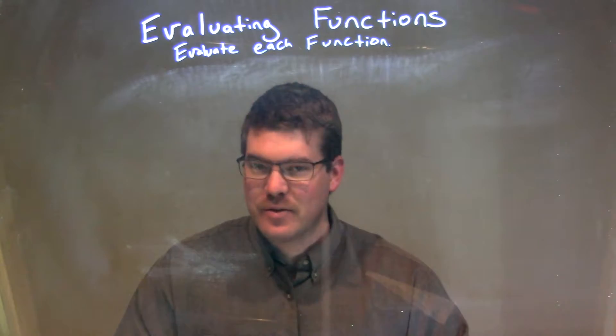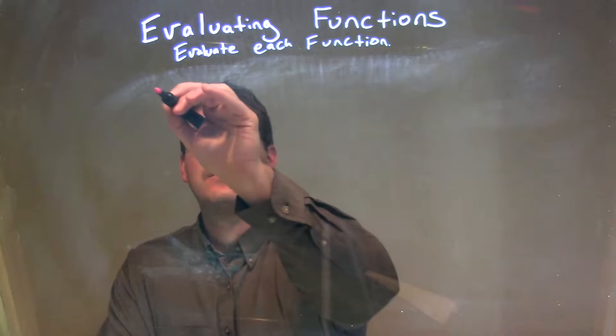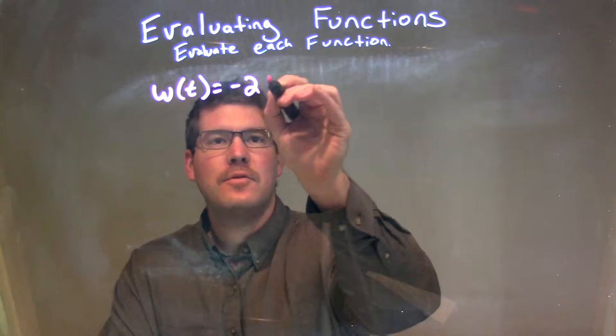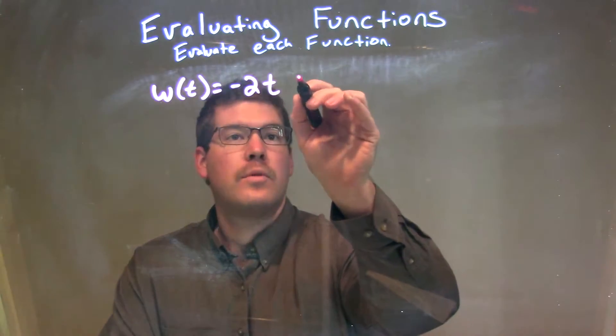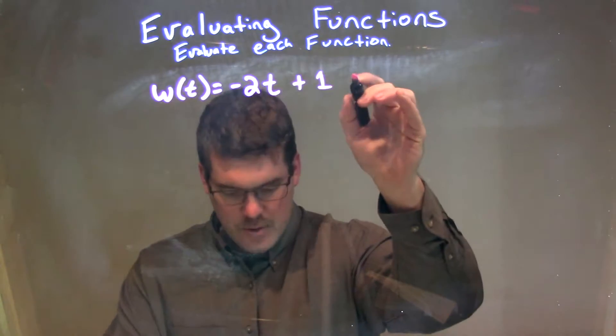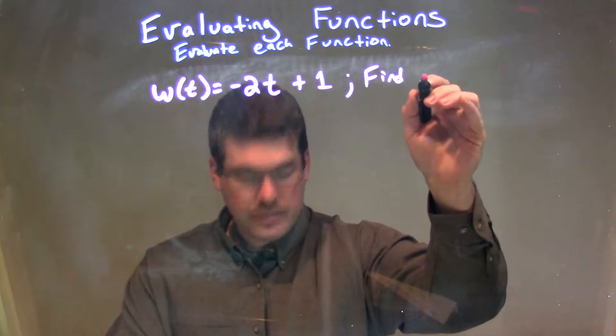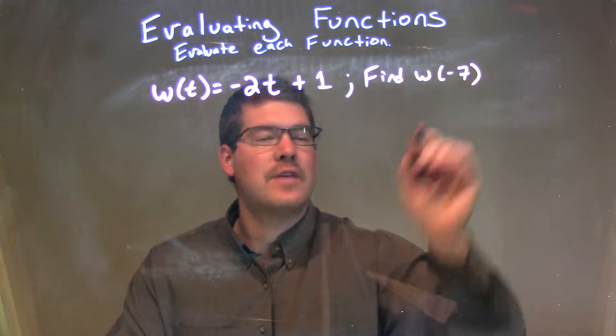If I was given this function, w of t is equal to negative 2t plus 1, and we have to find w of negative 7.